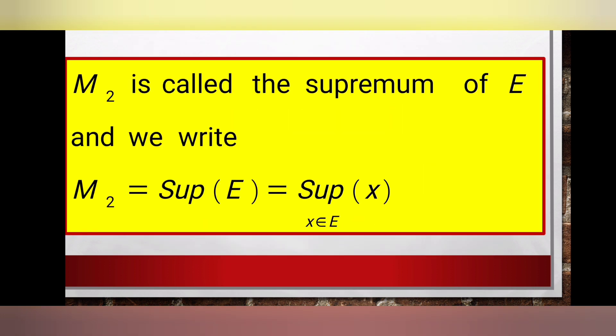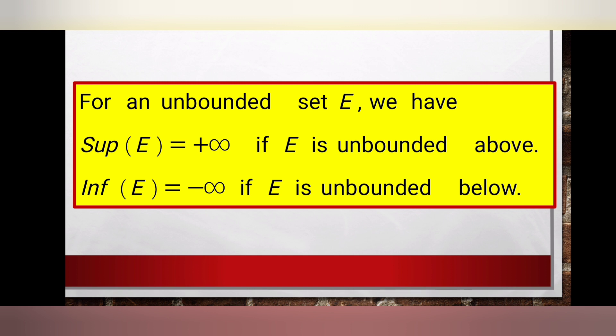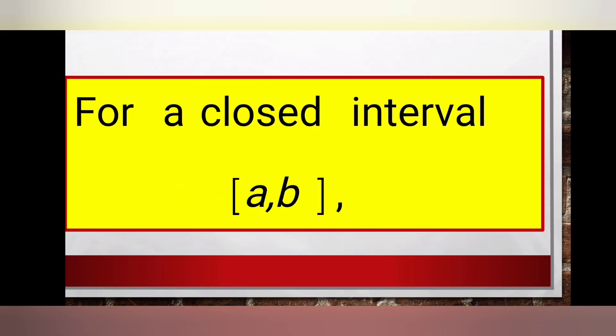m2 is called the supremum of E and we write it this way. Now let's look at unbounded sets. If we have a set E that is unbounded above, then the supremum of E is equal to plus infinity. And if we have a set E that is unbounded below, the infimum of E is equal to minus infinity.